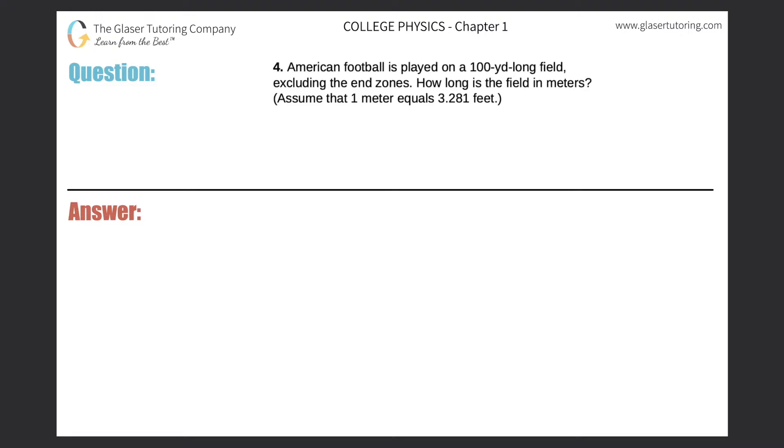Number four. American football is played on a 100-yard long field, excluding the end zones. How long is this field in meters? Okay, and it also tells us to assume that one meter is equal to 3.281 feet.